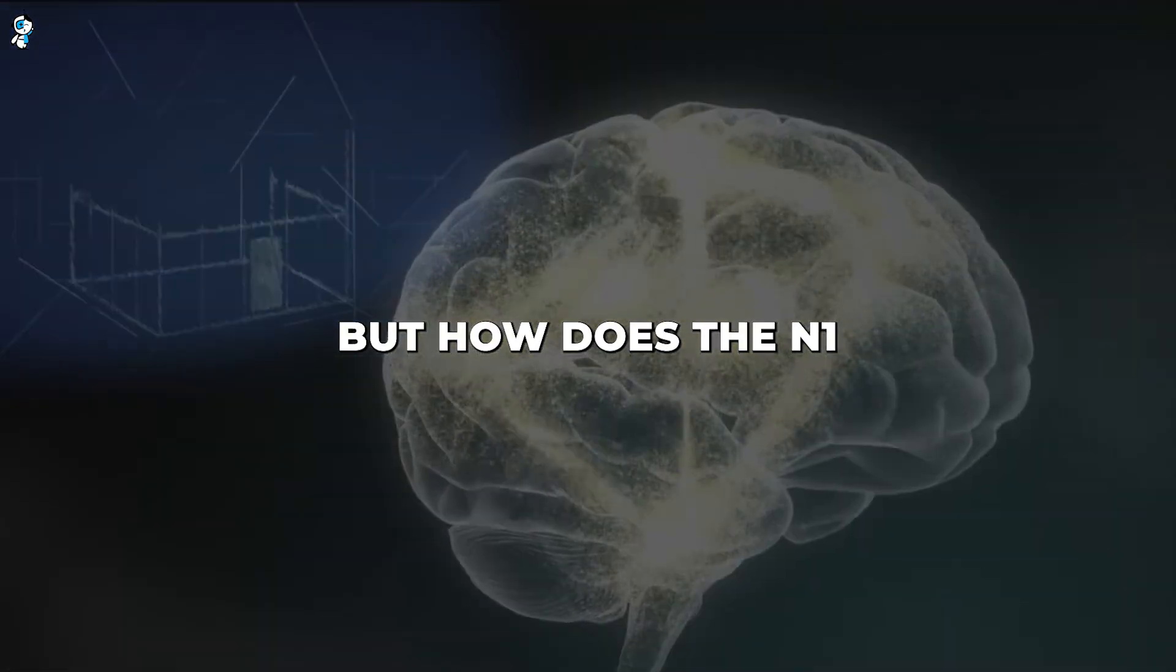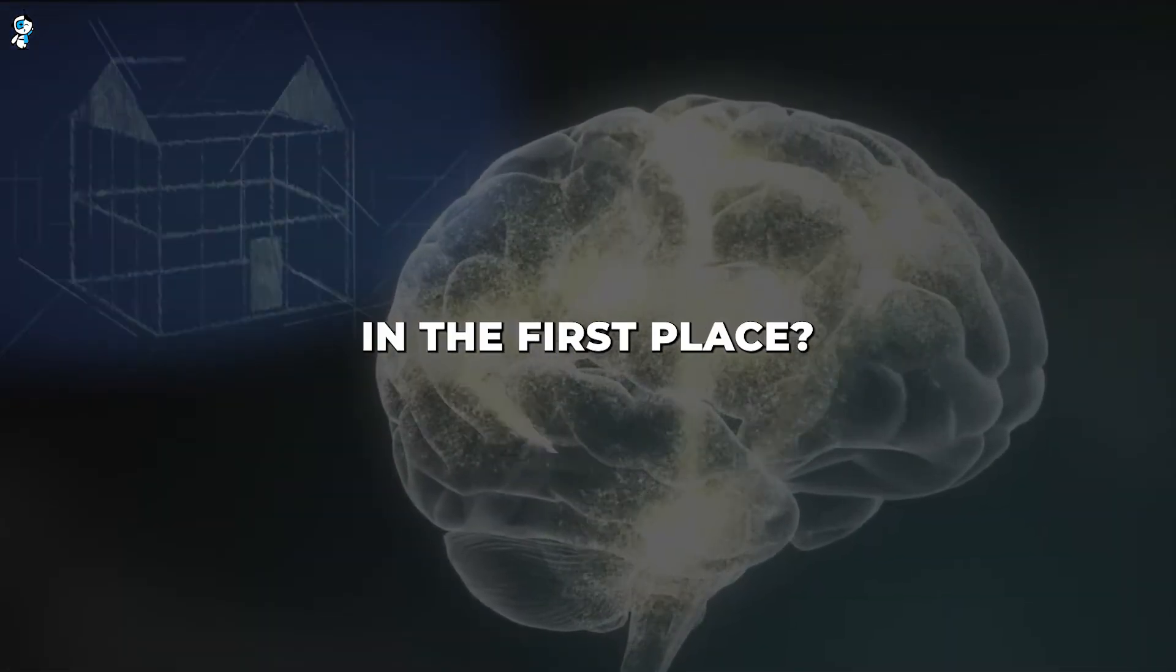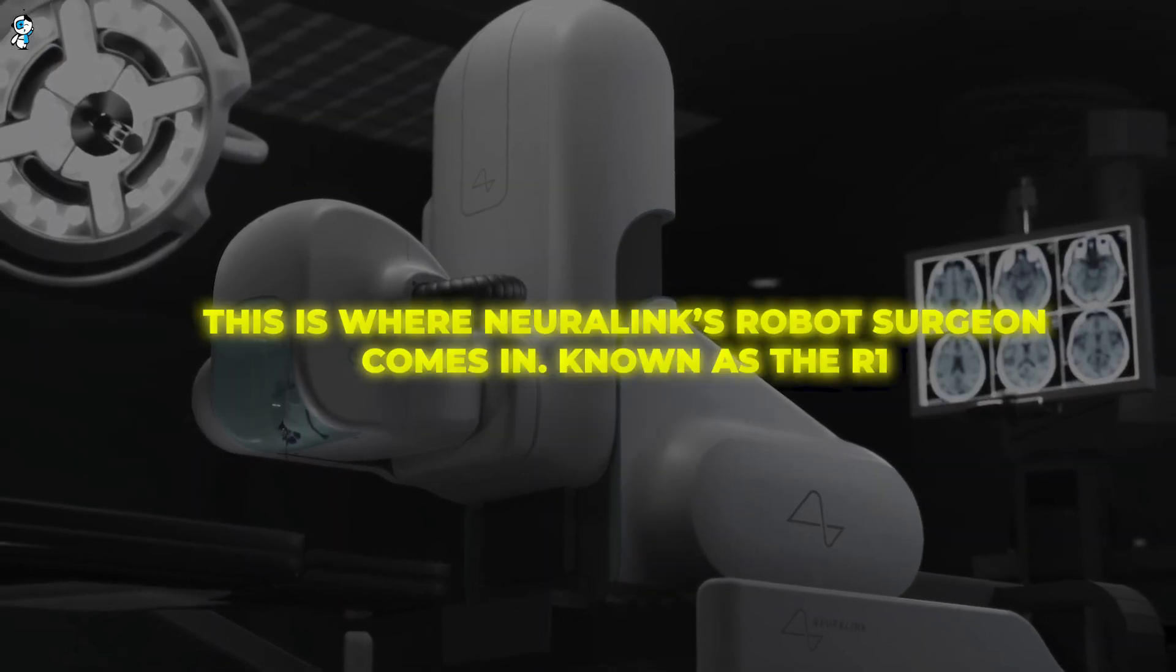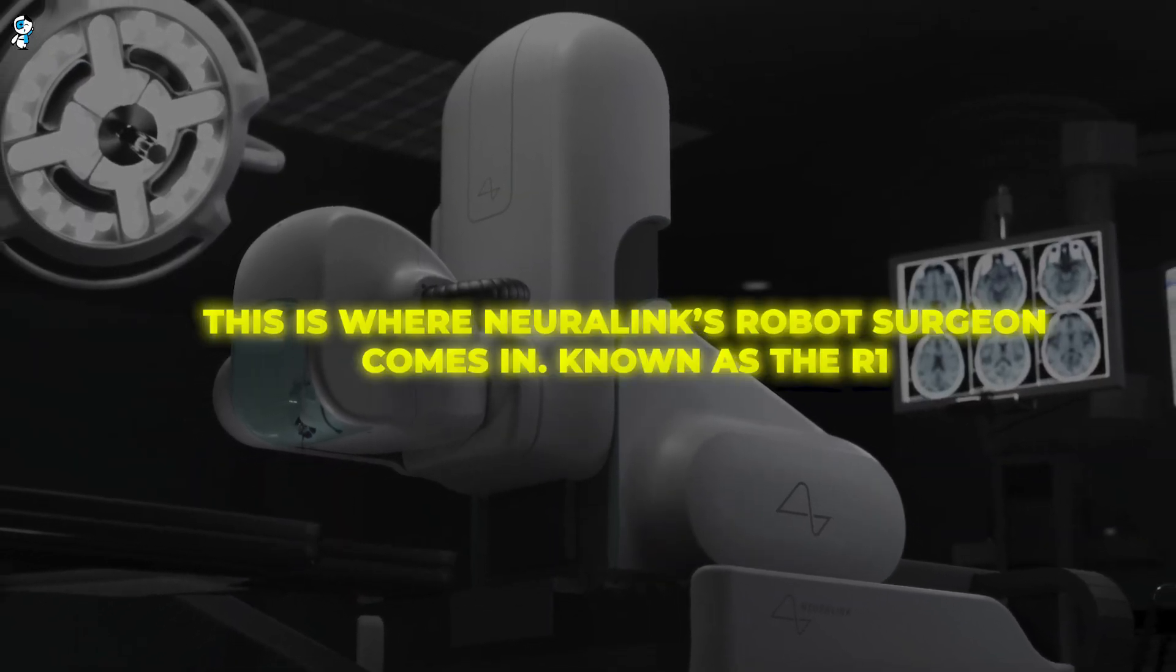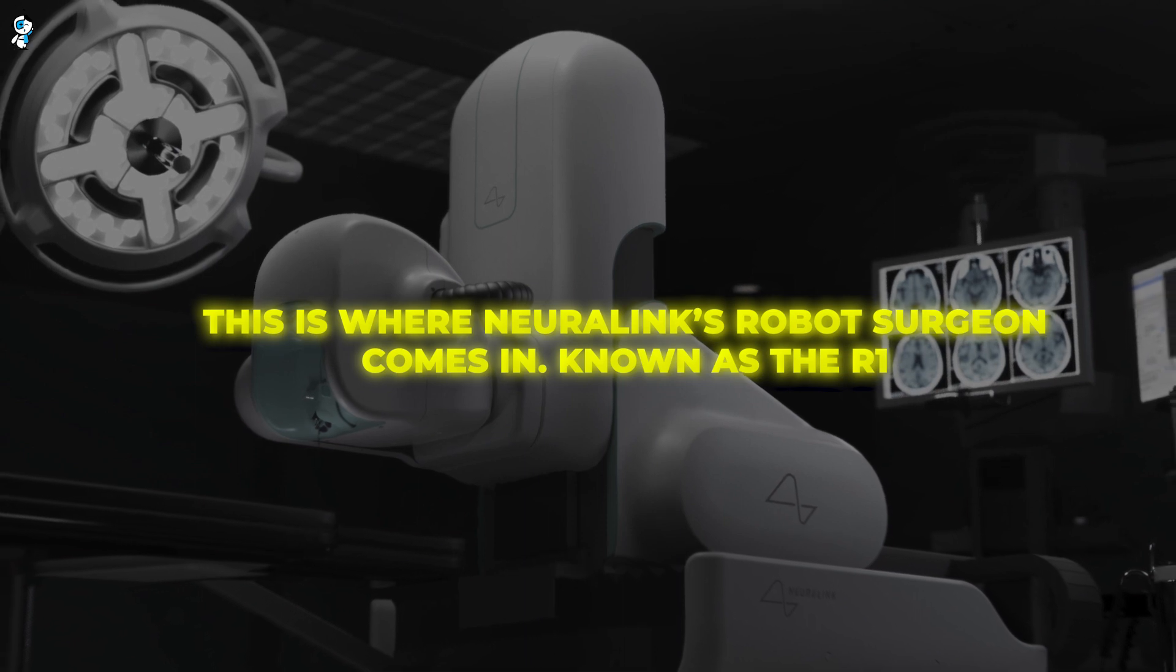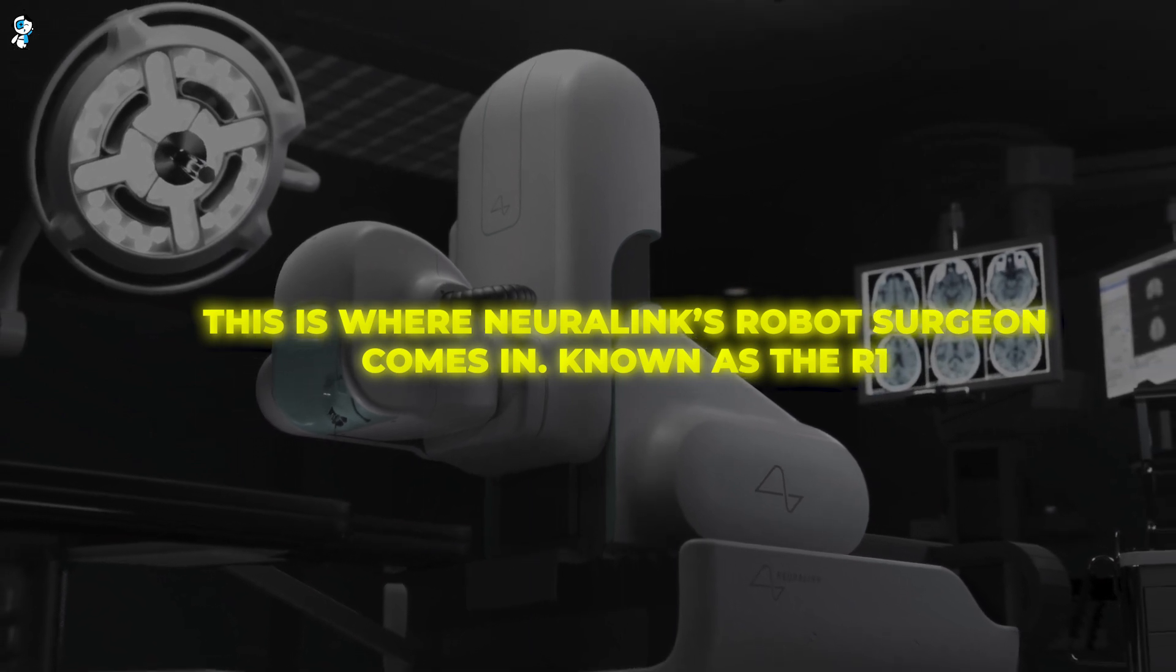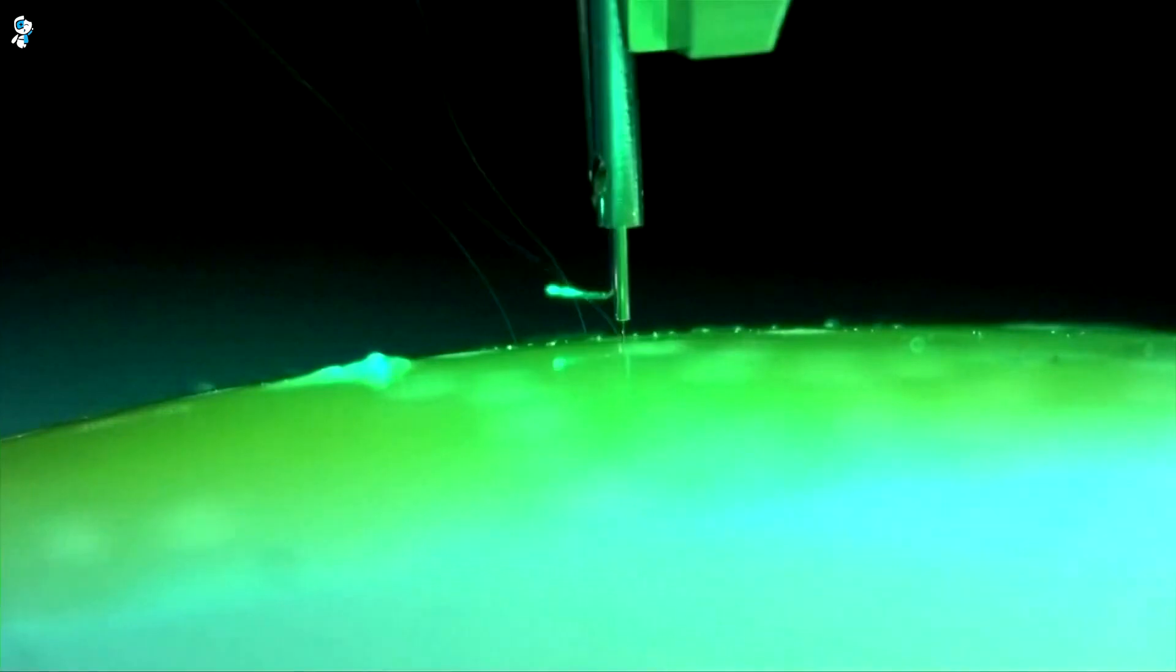But how does the N1 get into the brain in the first place? This is where Neuralink's robot surgeon comes in. Known as the R1, it is the secret weapon that will allow the N1 threads to be implanted with unmatched precision. Imagine a highly advanced sewing machine and you'll get the idea.